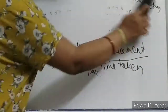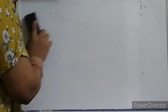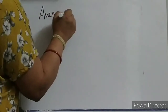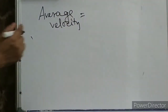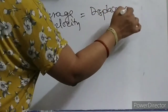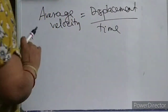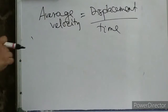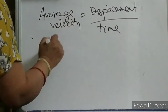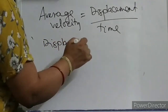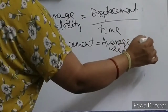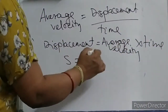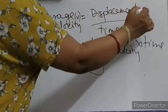What is average velocity? Average velocity is nothing but total displacement divided by time taken. Suppose average velocity is given and time is given — can you find out what is the displacement? Displacement will be average velocity into time. So S = V × T, since V = S/T. We are going to use all these formulas in numerical problems.